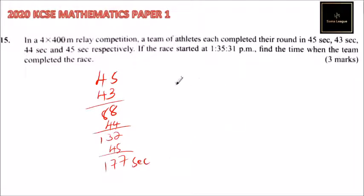So you have to convert this to minutes. So 177 you divide by 60 so that you convert them to minutes. So this will be 2 for 120, so you have 57 seconds remaining.